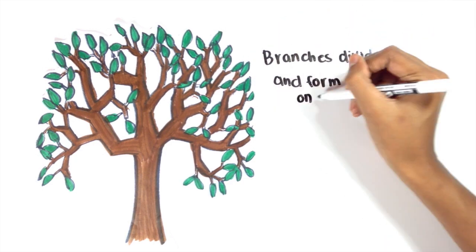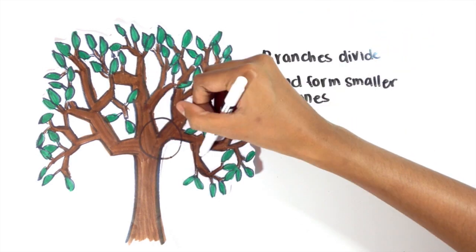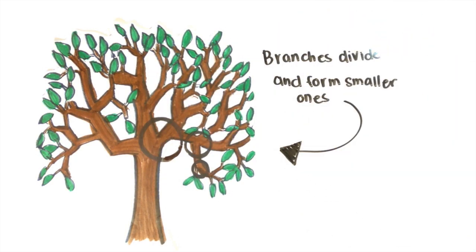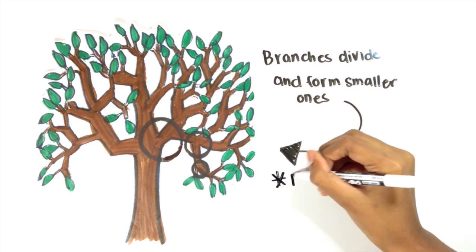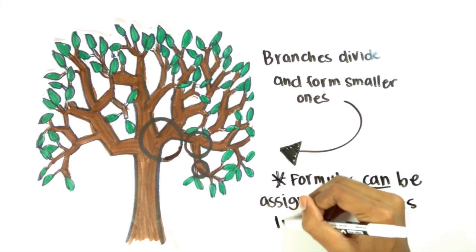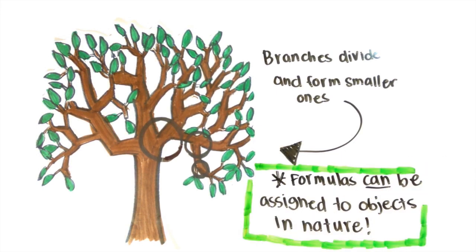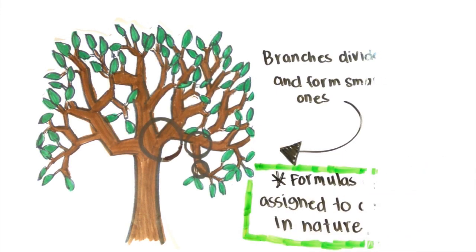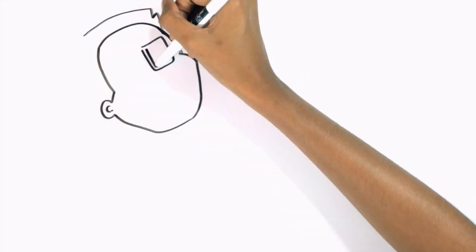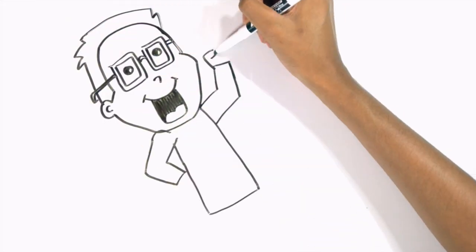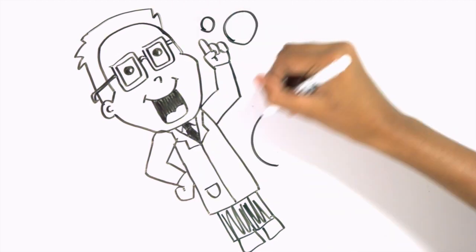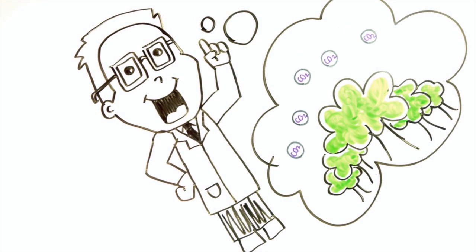Another example portraying self-similarity is a tree. The pattern of branching at each node is very similar throughout the tree, as branches diverge at certain points from the trunk to the branches to the stem. Knowing when branches split, you can actually assign a code to the tree or any fractal that can help produce a replica on a computer. Using this, a group of scientists were able to determine the amount of carbon dioxide a whole forest collected.